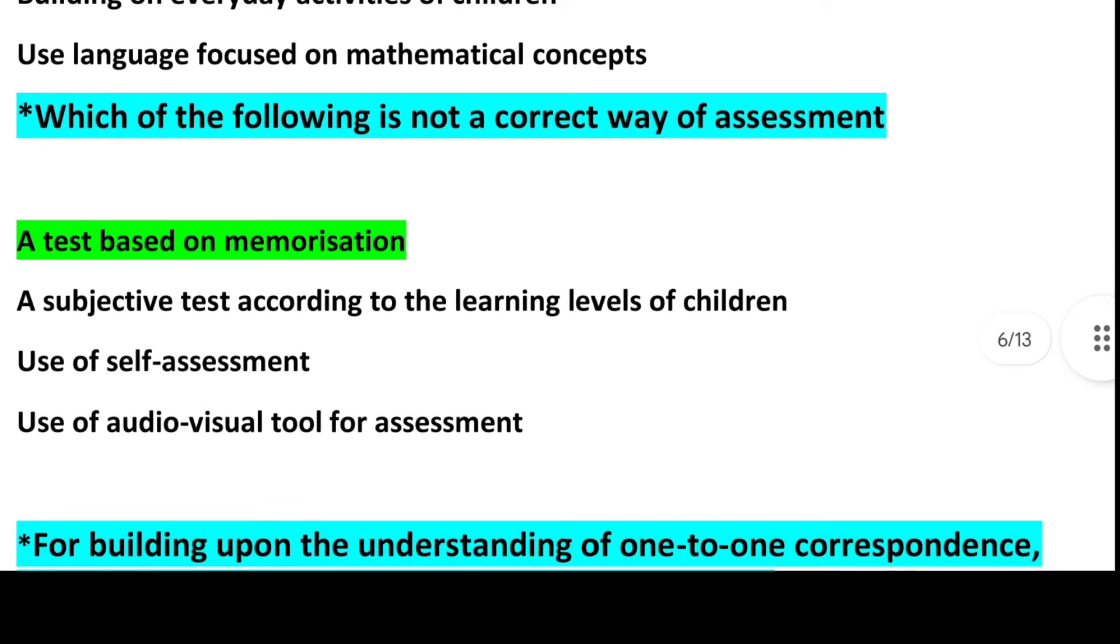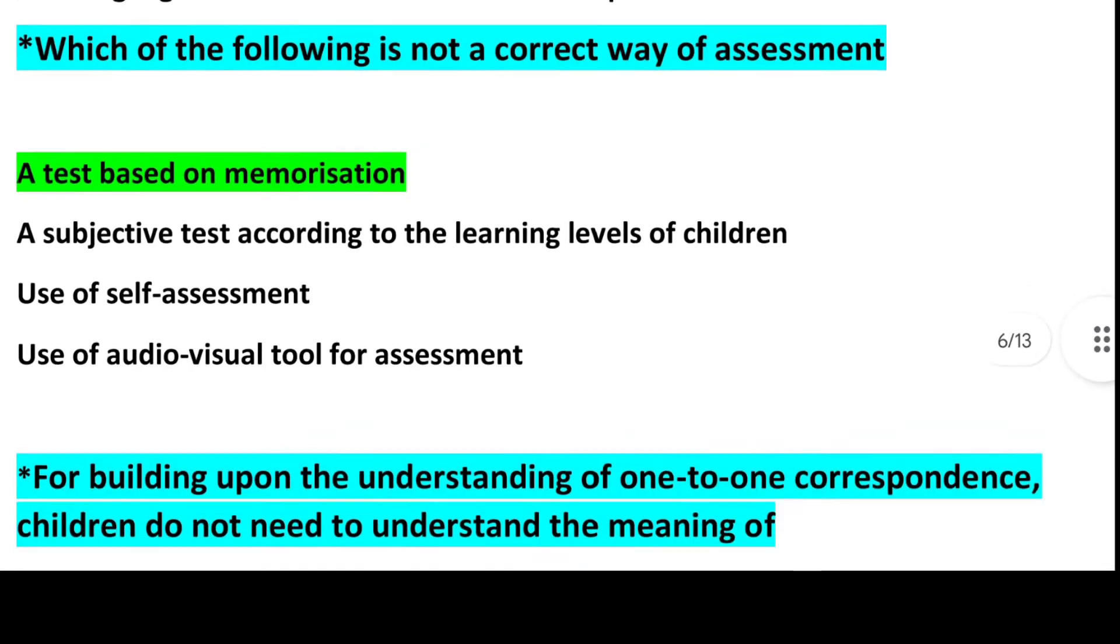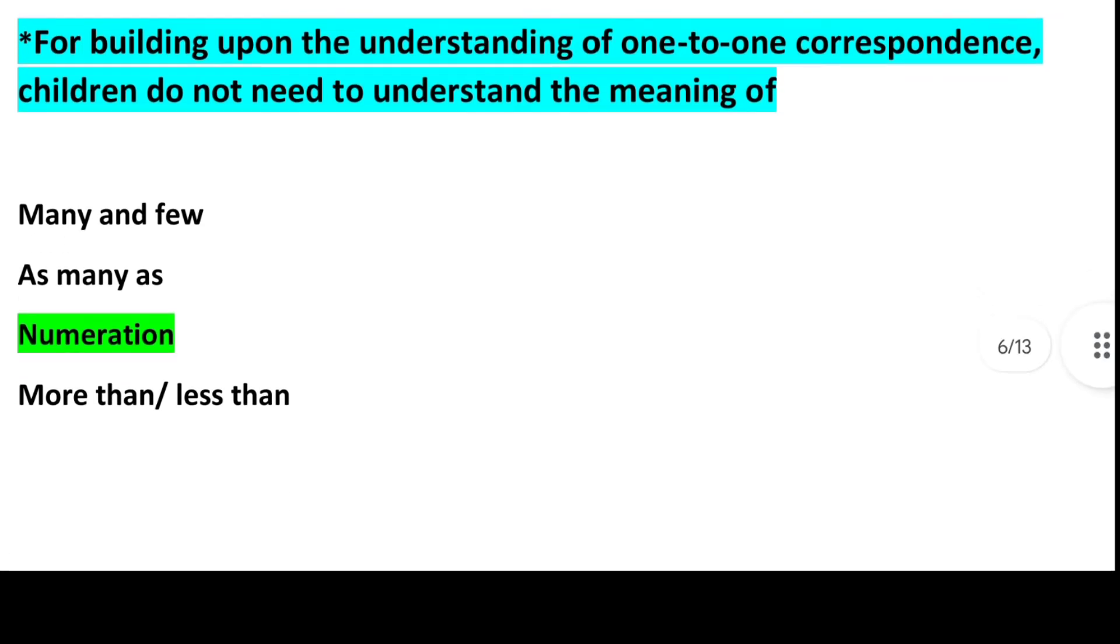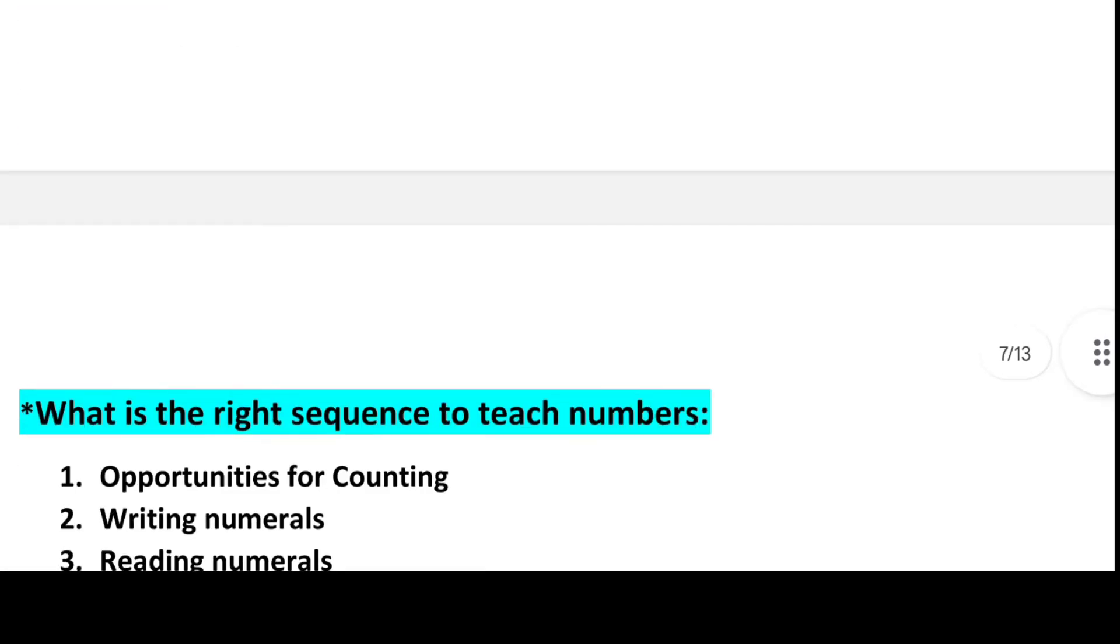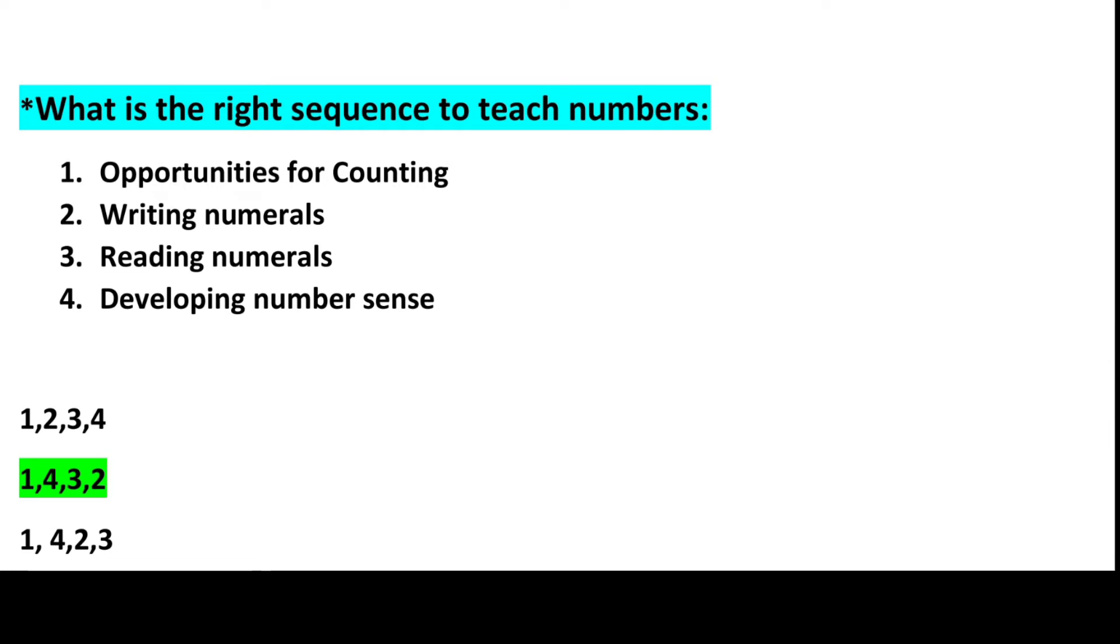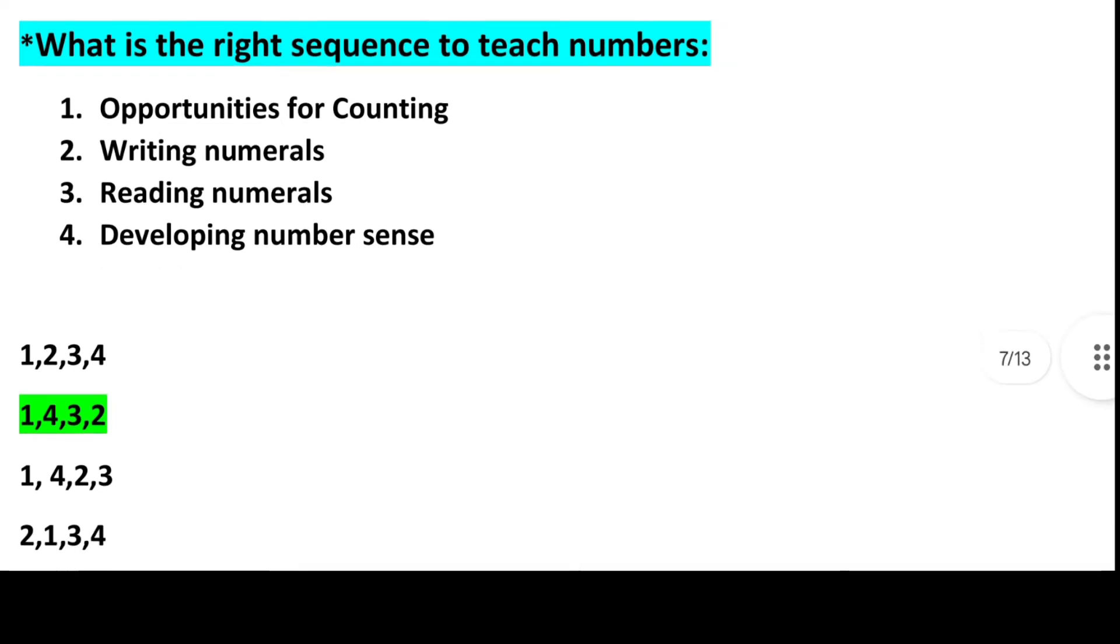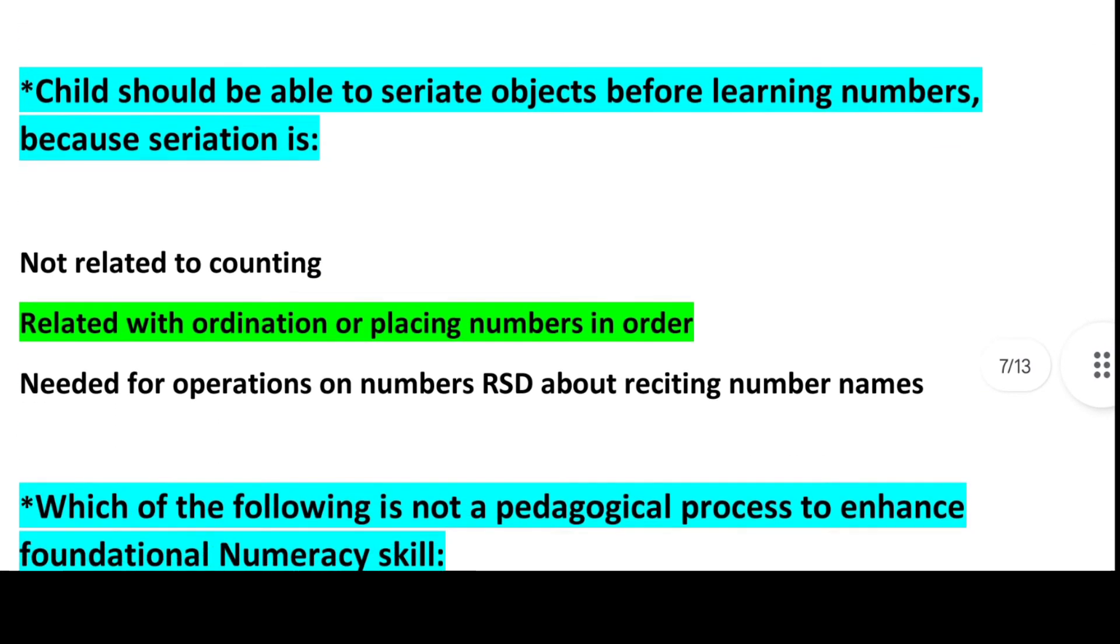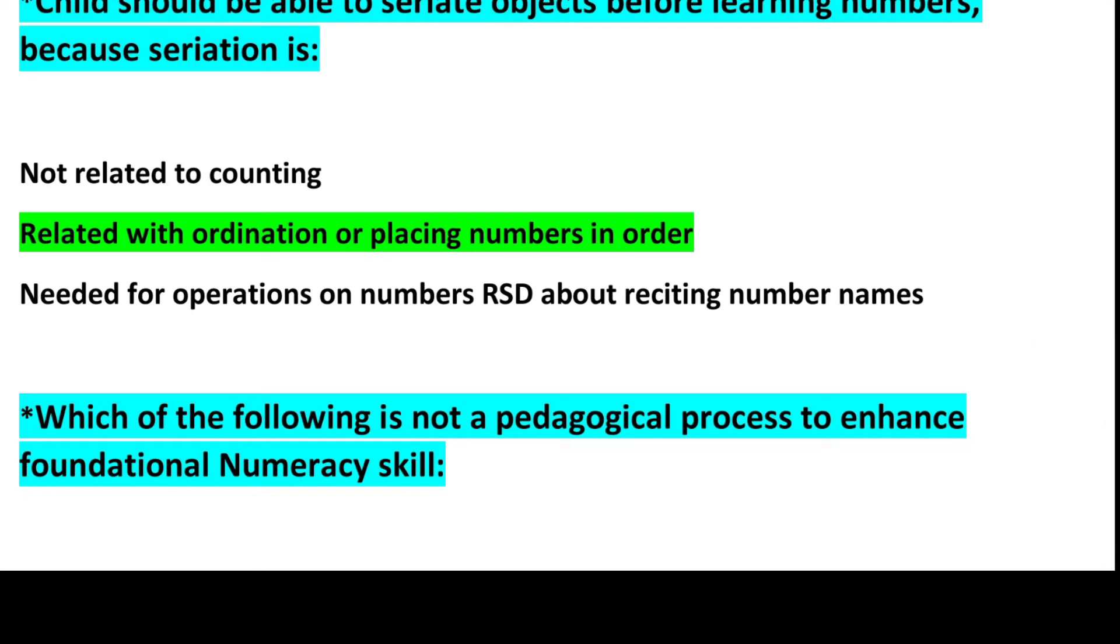Next question: Which of the following is not a correct way of assessment? Answer is Option 1, A test based on memorization. Next question: For building upon the understanding of one-to-one correspondence, children do not need to understand the meaning of. Answer is Option 3, Enumeration. Next question: What is the right sequence to teach numbers? Options are opportunities for counting, writing numerals, reading numerals, developing number sense. Answer is Option 2: 1, 4, 3, 2 will be the correct order. Child should be able to seriate objects before learning numbers because seriation is. Answer is Option 2, Related with ordination or placing numbers in order.